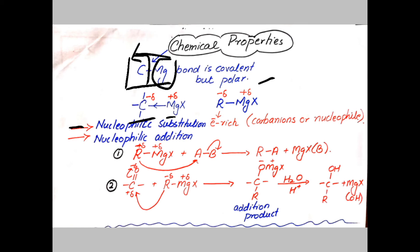The carbon bearing the negative charge acts as a nucleophile, so Grignard reagent undergoes nucleophilic substitution reactions as well as nucleophilic addition reactions. This is because carbon has a partial negative charge — it is an electron-rich species that seeks positive charge in other species. This electron-rich carbon is called a carbanion or carbon anion.